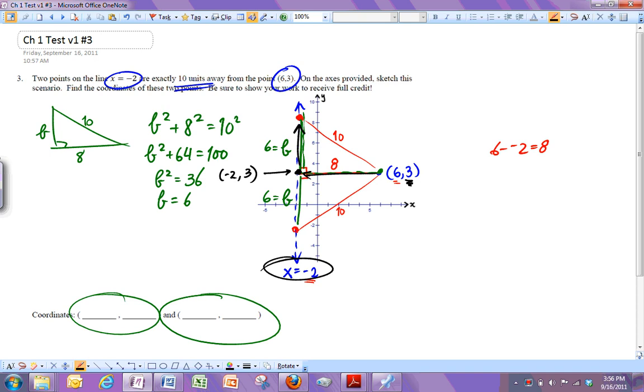Then, I got to go up 6 from there. So, when I go up and down, only the y values change. Since I was at 3, and I go up 6, I'm going to add 6 to that. Negative 2 stays the same, and 3 plus 6 becomes 9. So, negative 2, 9.